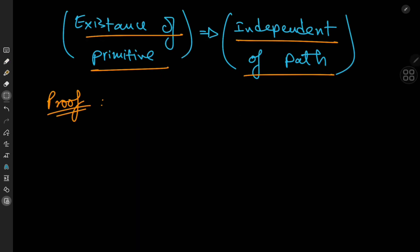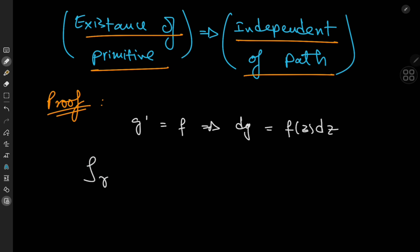The proof is actually pretty simple. All we need is the fact that the derivative of g equals f, which implies that dg = f(z) dz. So the contour integral over gamma of f(z) dz equals the contour integral over gamma of dg.